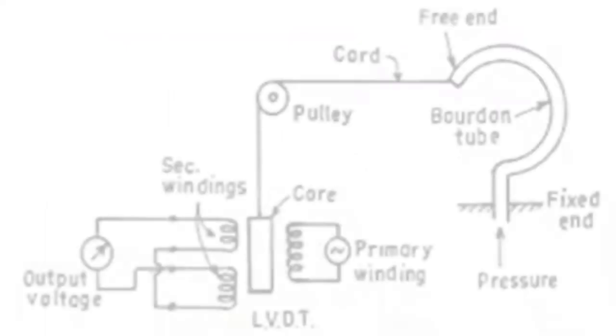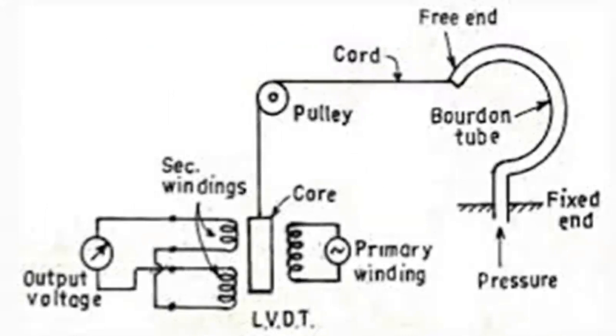Linear variable differential transformer is an electromechanical type inductive transducer that converts rectilinear displacement into AC electrical signal. Since LVDT is a secondary transducer, physical quantities such as force, weight, pressure, tension, etc. are first converted into displacement by a primary transducer, and then LVDT is used to measure it in terms of the corresponding electrical signal.